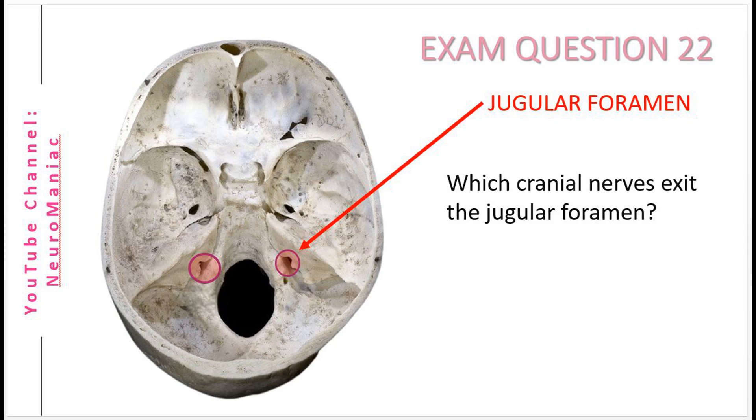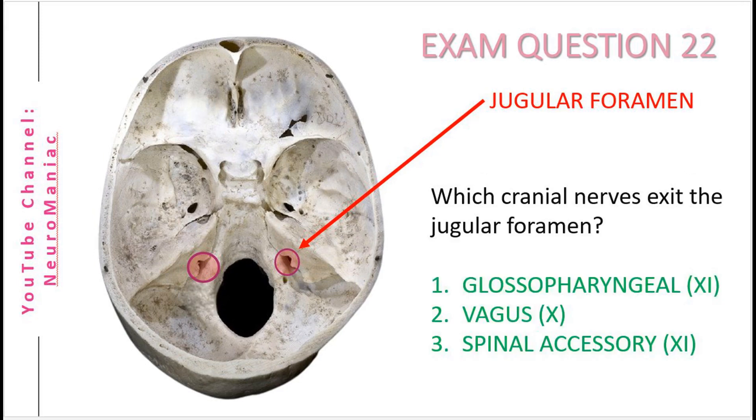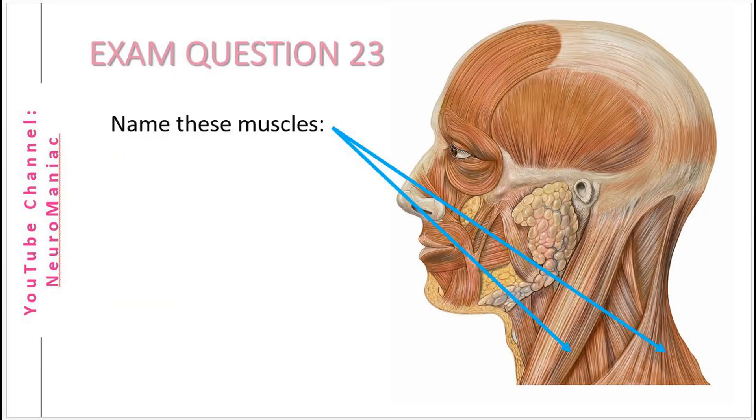Question 22: Which cranial nerves exit the jugular foramen? Question 23: Label these muscles.